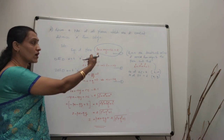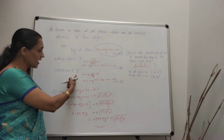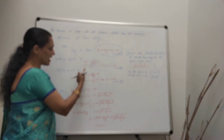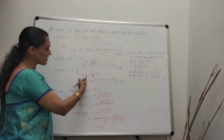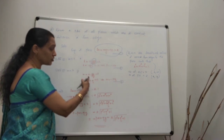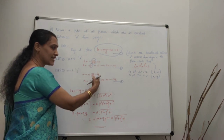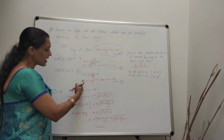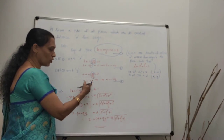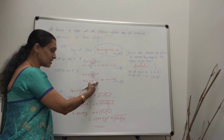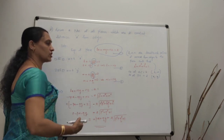Differentiate equation 1 again with respect to y: 0 + m + n·(∂z/∂y) = 0, giving m + nq = 0. Replacing ∂z/∂y with q, we get m = -nq. Put this as equation 3.